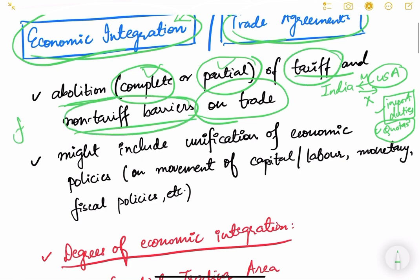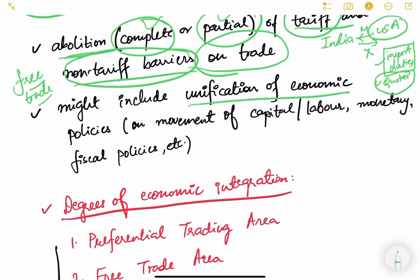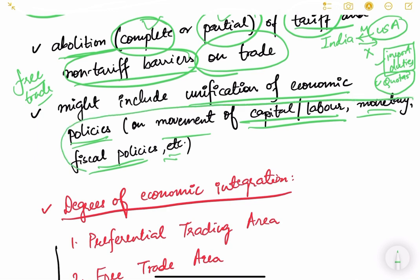Free trade means trade can happen without much hassle and without hurdles — not free in the sense of money. Trade agreements may also include unification of economic policies such as free movement of labor and capital, monetary policies, and fiscal policies. When this unification of policies is also included, it results in economic integration.